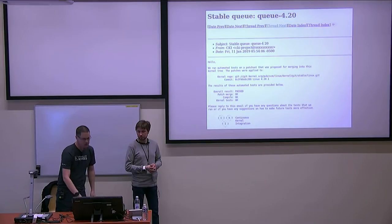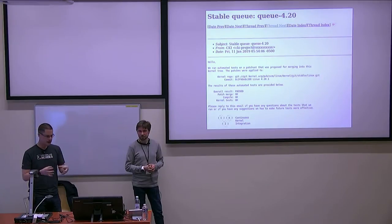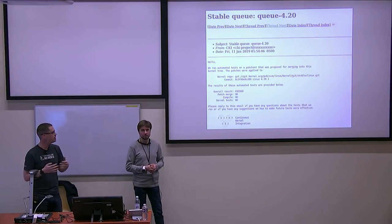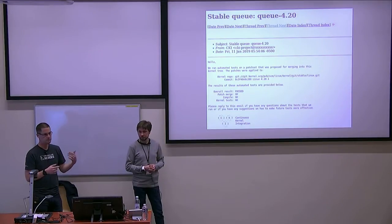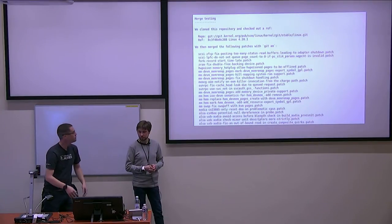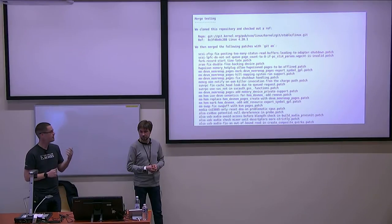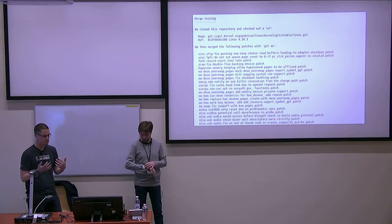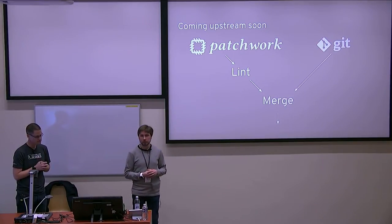Then we asked: what if we went even earlier in Greg's workflow? Greg has a separate repo called stable-queue where he takes patches and puts them in a directory. The patch list grows and shrinks as people do testing and argue about whether a patch needs to go in — sometimes 20 patches, sometimes a hundred or more. So we said: every time he changes that repo, let's just test it and give him feedback before he even makes an RC. Now every time he makes a change to that repo, within about 15 or 20 minutes we begin tests — we can give him feedback before he even thinks about building an RC.